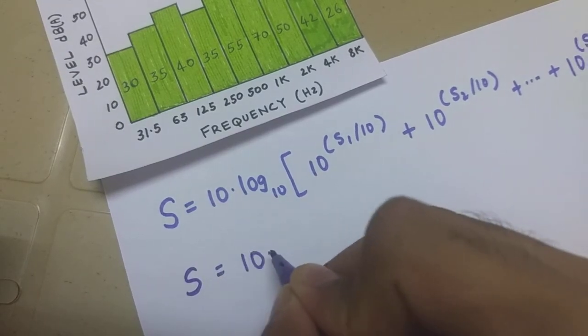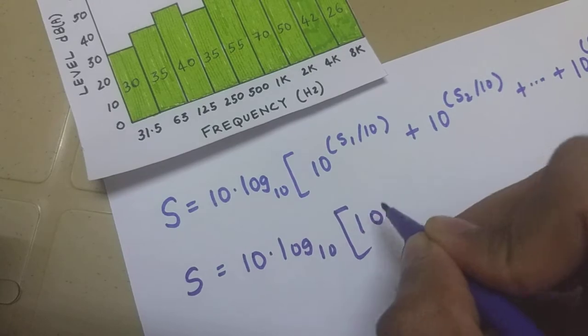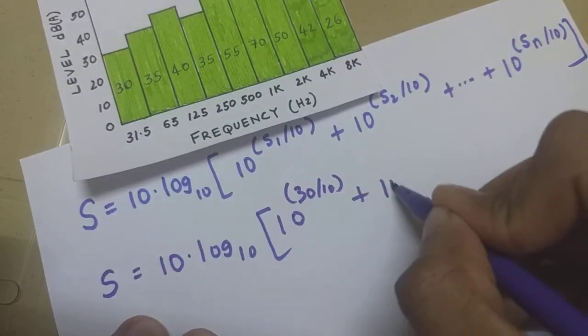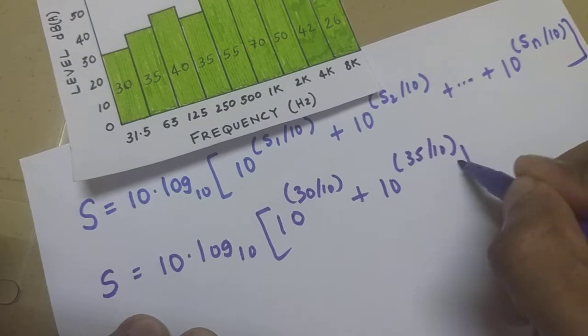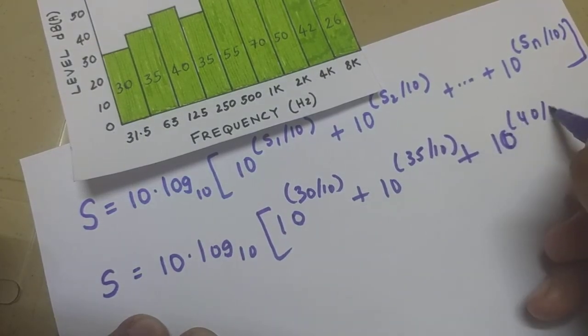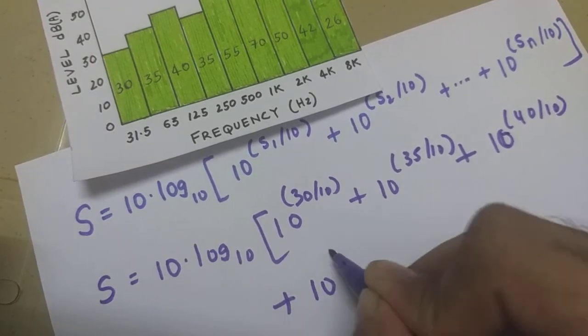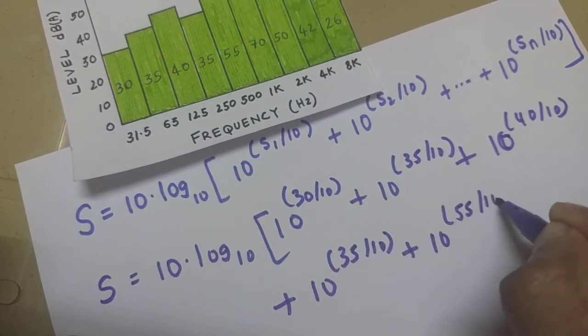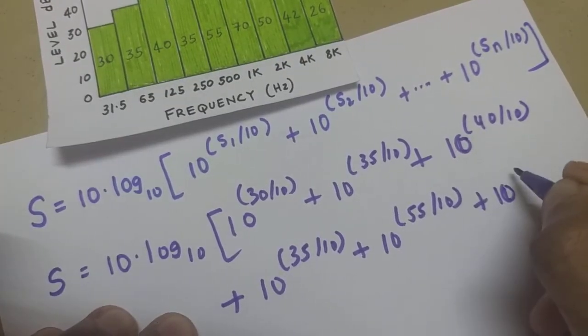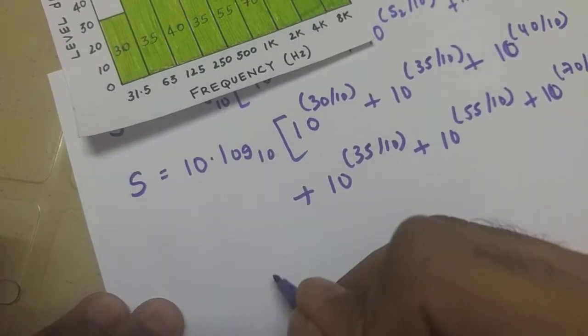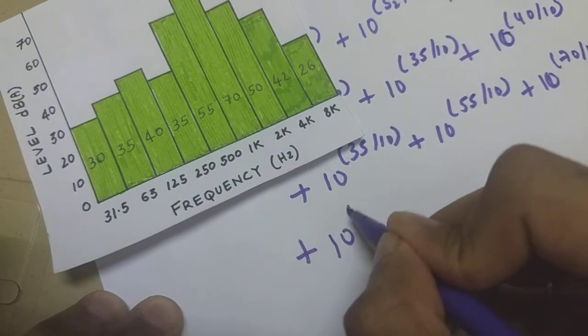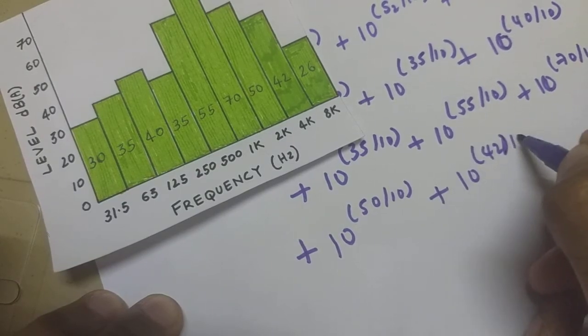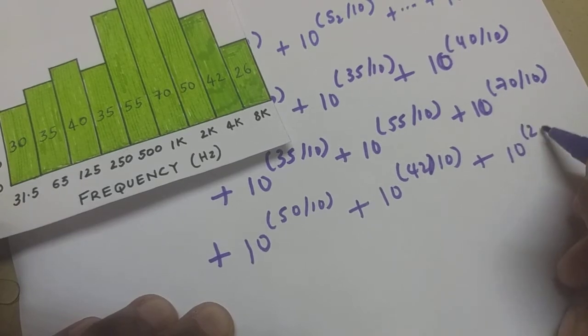Alright, so s equals 10 log to the base 10, 10 power 30 by 10 plus 10 power 35 by 10 plus 10 power 50 by 10 plus 10 power 45 by 10 plus 10 power 55 by 10 plus 10 power 70 by 10 plus 10 power 50 by 10 plus 10 power 42 by 10 and finally 10 power 26 by 10.